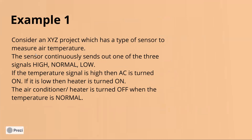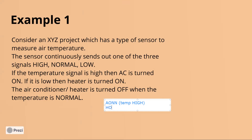You have to make a state transition diagram: if the temperature signal is high, then we have to turn on the AC. So we turn on the AC when the temperature is high. And if our temperature is low, then we have to turn on the heater. So we turn on the heater when the temperature is low.